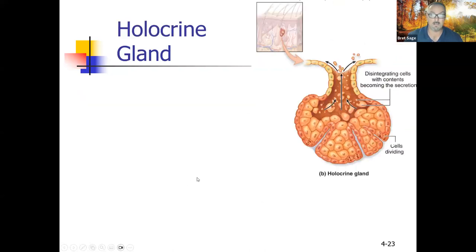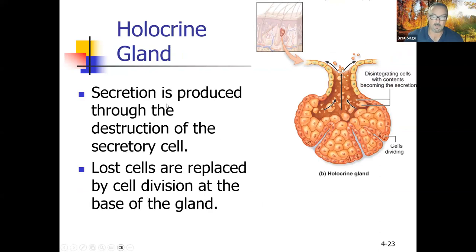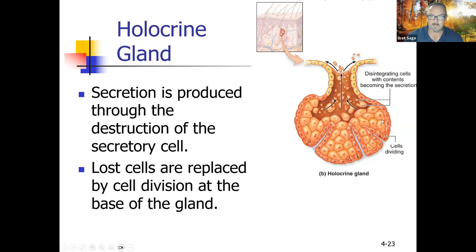Holocrine glands are the opposite. These cells actually break up — they basically commit suicide and turn into the excretion. Secretion is produced through the destruction of the secretory cell. These cells are full of oil, and when they rupture, that oil comes out and makes its way onto the surface, making our hairs and skin flexible and somewhat water resistant. Lost cells are replaced by cell division at the base of the gland — mitosis is happening right at the base.